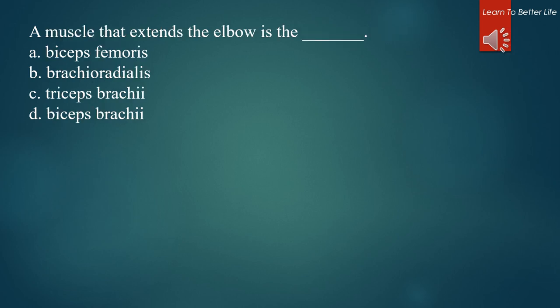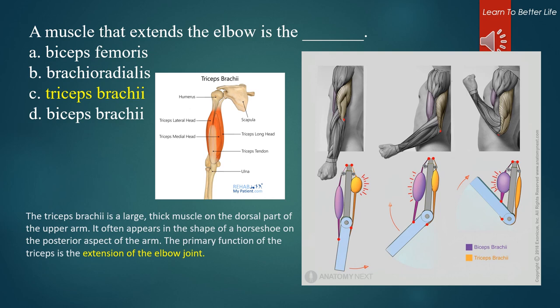A muscle that extends the elbow is the. A. Biceps femoris. B. Brachioradialis. C. Triceps brachii. D. Biceps brachii. The answer is C. Triceps brachii. The triceps brachii is a large, thick muscle on the dorsal part of the upper arm. It often appears in the shape of a horseshoe on the posterior aspect of the arm. The primary function of the triceps is the extension of the elbow joint.